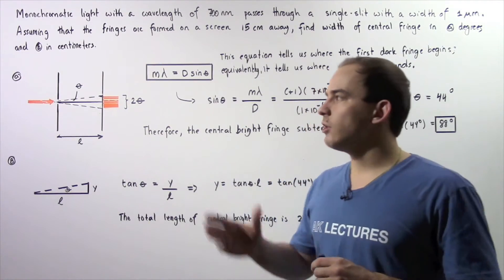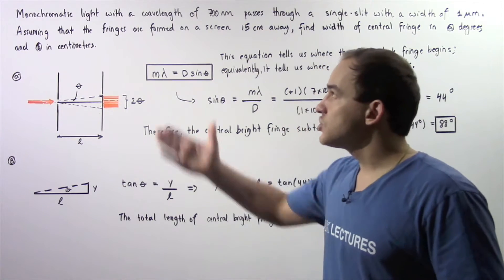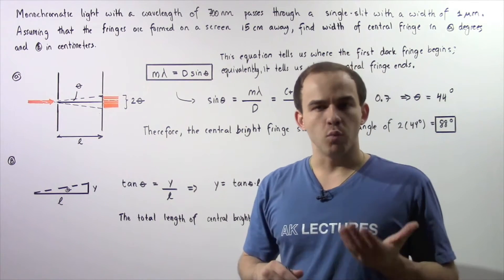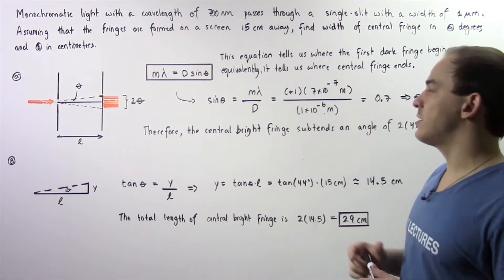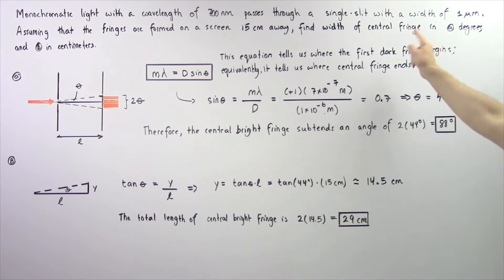Let us look at the following example that deals with single slit diffraction. Monochromatic light with a wavelength of 700 nanometers passes through a very small slit with a width of 1 micrometer.